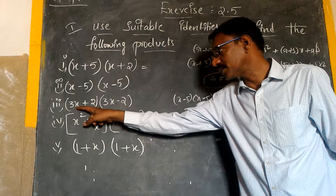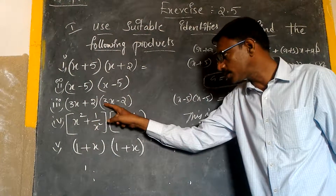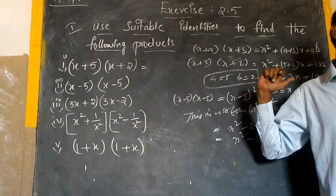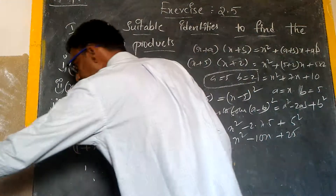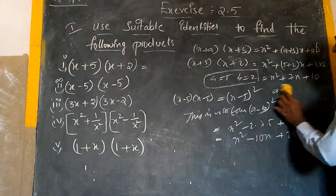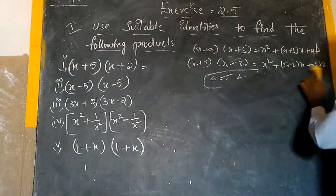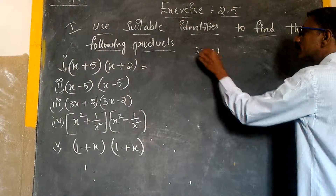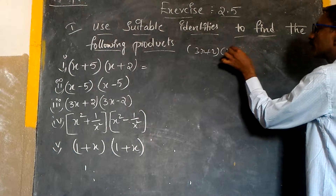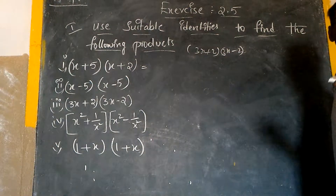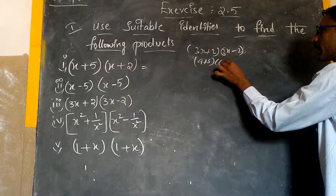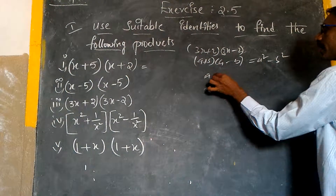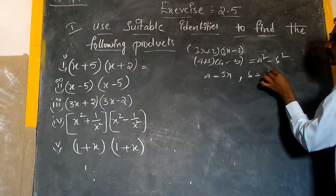Similarly, by observing this one, we have (3x + 2)(3x − 2). This is in the form of (A + B)(A − B), which equals A² − B². Now, what is my A? 3x. What is my B? 2. That's all.